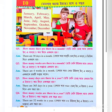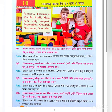How many days are there in a month? There are 30 days in a month. How many weeks are there in a month? There are 4 weeks in a month. How many days are there in a year? There are 365 days in a year. How many weeks are there in a year? There are 52 weeks in a year.